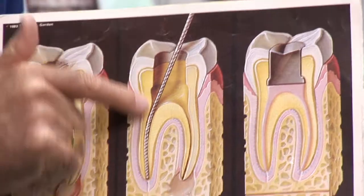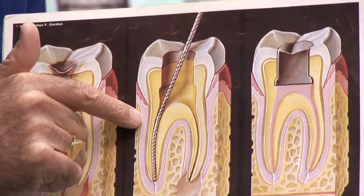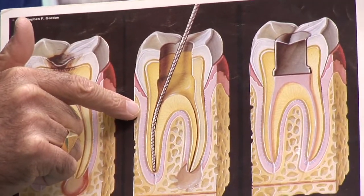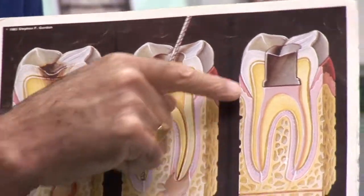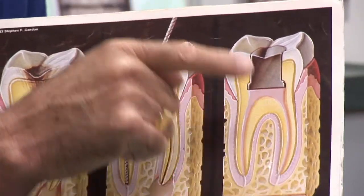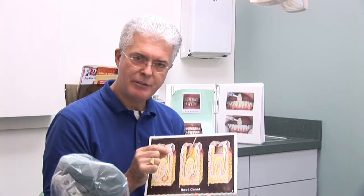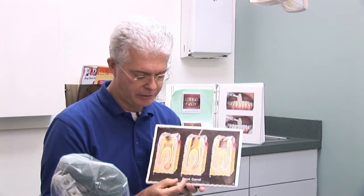We use special small instruments to go down inside the tooth and clean and shape the inside of the tooth so that we can disinfect it and then have a path or an avenue to place a special filling that seals the sides of the root and actually seals it at the apex so that the bone of the body can heal around it.